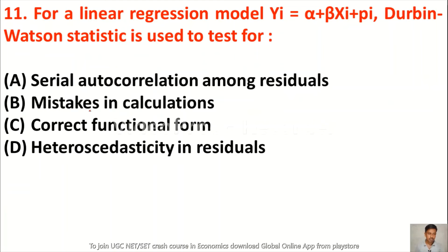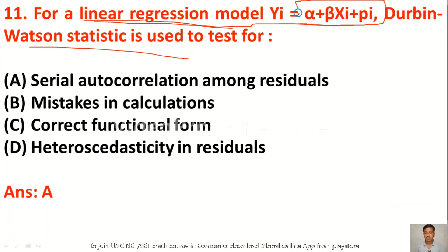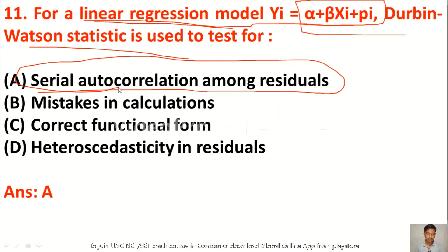Question 11: For a linear regression model Yi = α + βXi + εi, the Durbin-Watson statistic is used to test serial autocorrelation among the residuals.